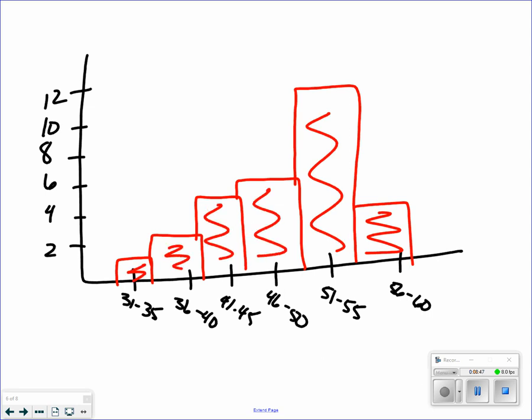We want to describe whether it's skewed left, skewed right, or symmetric. Most of this data, you notice the highest place for this data is on the right-hand side. So this is considered skewed left.